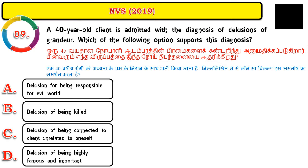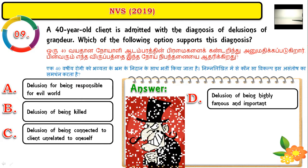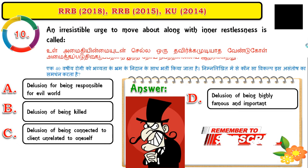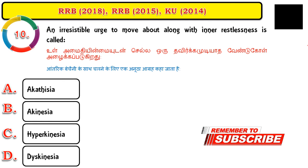Question number nine: a 40-year-old client is admitted with a diagnosis of delusion of grandeur. The correct answer is: delusion of being highly famous and important. Whenever the person has self-exaggerated thoughts — such as believing he is a famous cricketer, has direct contact with God, or speaks daily with the Chief Minister or Prime Minister — that is considered delusion of grandeur.